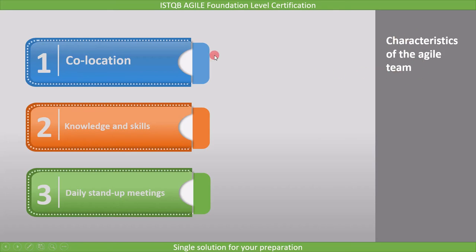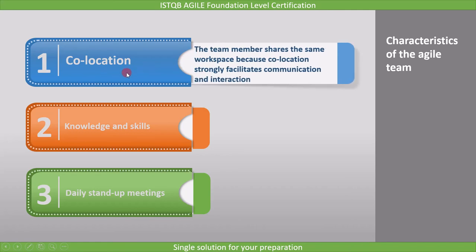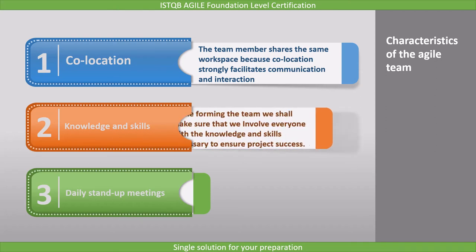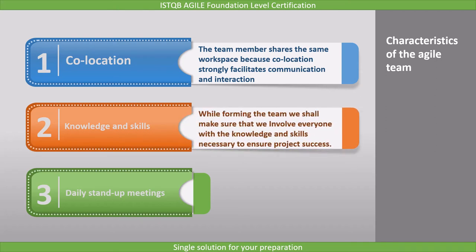Let's see some of the characteristics of the agile team. The first characteristic is co-location. Team members share the same workspace because co-location strongly facilitates communication and interaction, which is one of the principles of the agile manifesto.